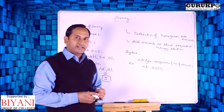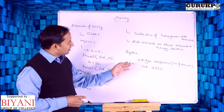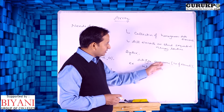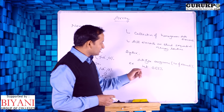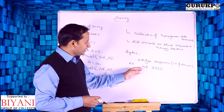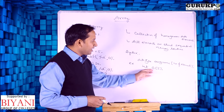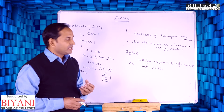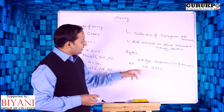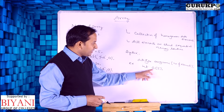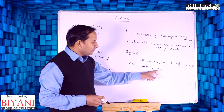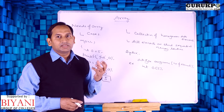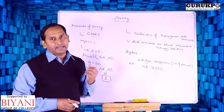Now we discuss the syntax of an array: data type, array name, and number of elements. For example, integer a of 5. In this case, 'a' is the array name which contains 5 elements of integer type.